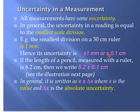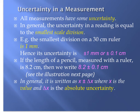We could also write that as plus or minus 0.1 centimeter. If the length of a pencil measured with this ruler is 8.2 centimeters, then we write 8.2 ± 0.1 cm. In other words, the true length lies anywhere between 8.1 and 8.3 centimeters. In general, this is written as x ± Δx, where x is the value (8.2) and Δx is the absolute uncertainty (0.1).